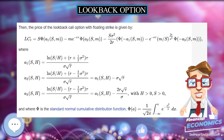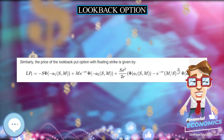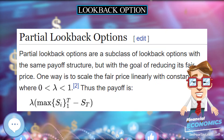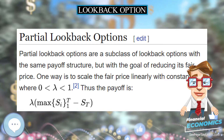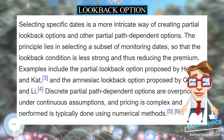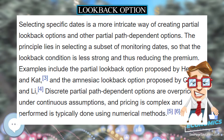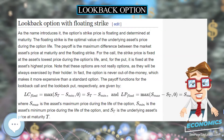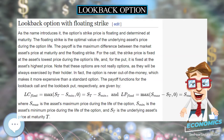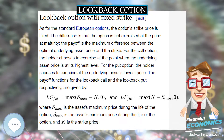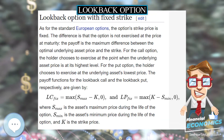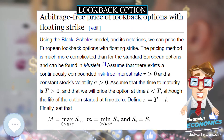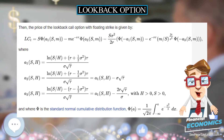Note that these options are not really options, as they will always be exercised by their holder. In fact, the option is never out of the money, which makes it more expensive than a standard option. The payoff functions for the lookback call and the lookback put, respectively, are given by: where SMAX is the asset's maximum price during the life of the option, SMIN is the asset's minimum price during the life of the option, and ST is the underlying asset's price at maturity.